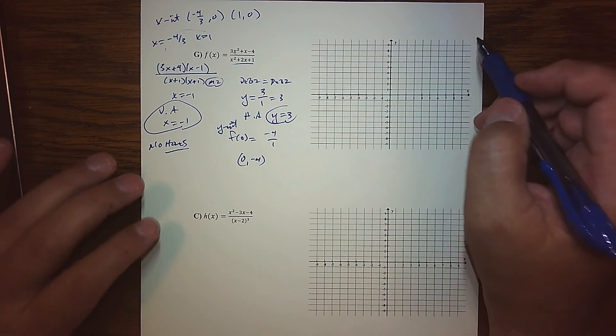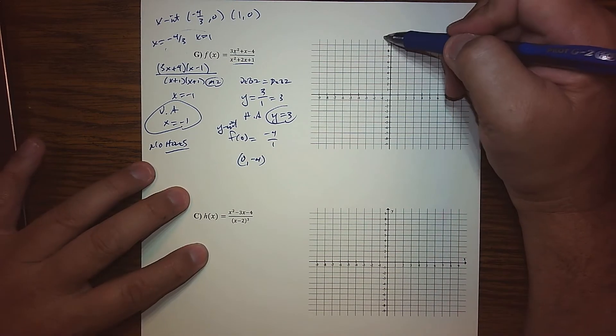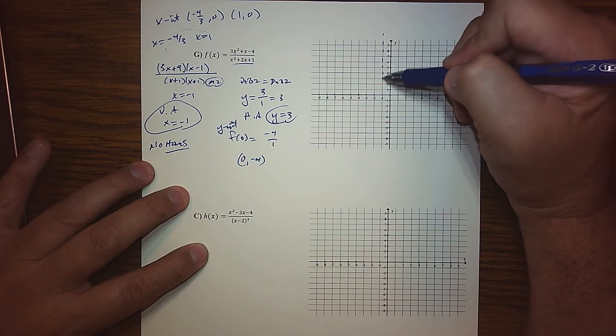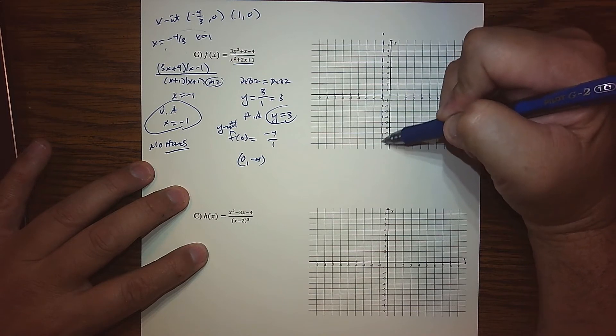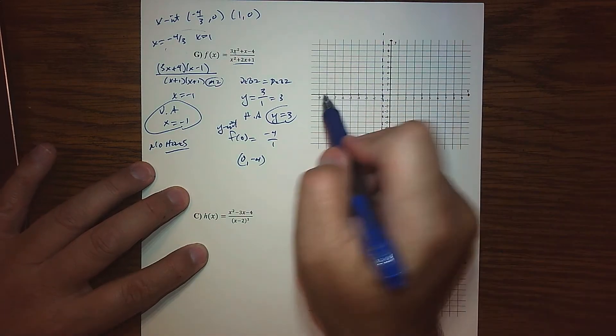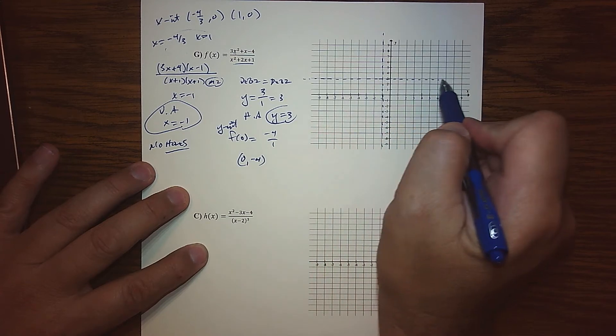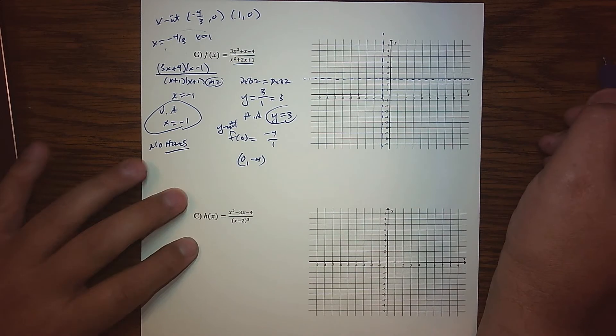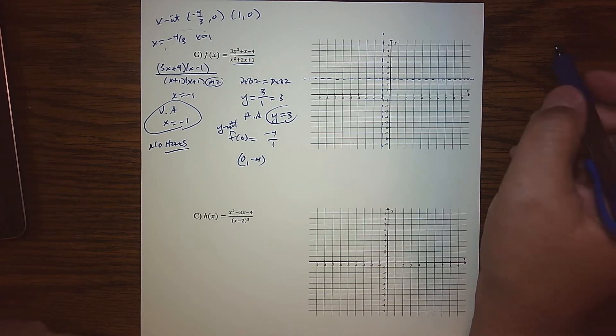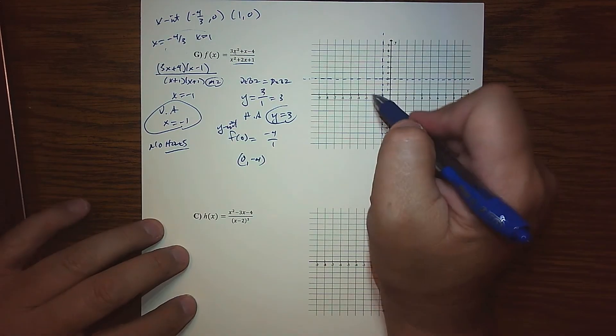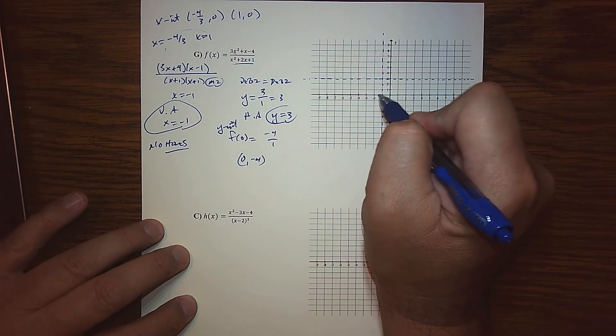Interesting, a lot of my graphs go through 0, negative 4. I might have to change that in some other videos. But at any rate, let's see if this is enough information to graph our function. So negative 1 is a vertical asymptote. Y equals 3 is a horizontal asymptote.